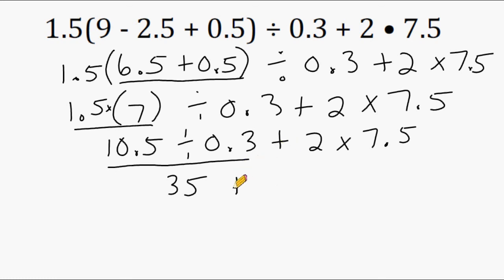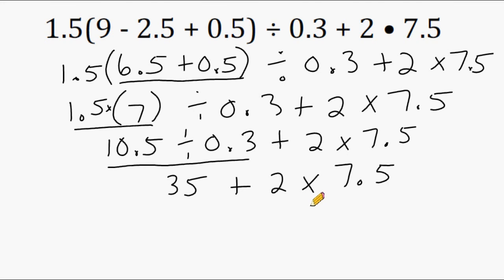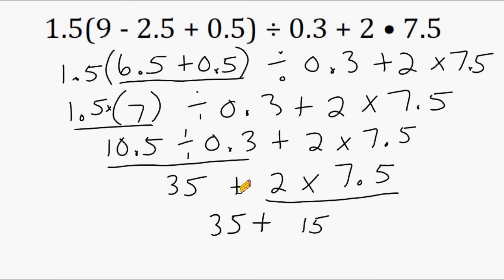Next, we bring down our addition sign and the number 2, then the multiplication sign and 7.5. At this point we just have two signs remaining: an addition sign and a multiplication sign. You always have to complete all multiplication and division before any addition or subtraction. So next, we have to multiply 2 by 7.5, which is 15. Now we bring down our addition sign and the number 35 and add those together. 35 plus 15 is equal to 50, which is the answer to this expression.